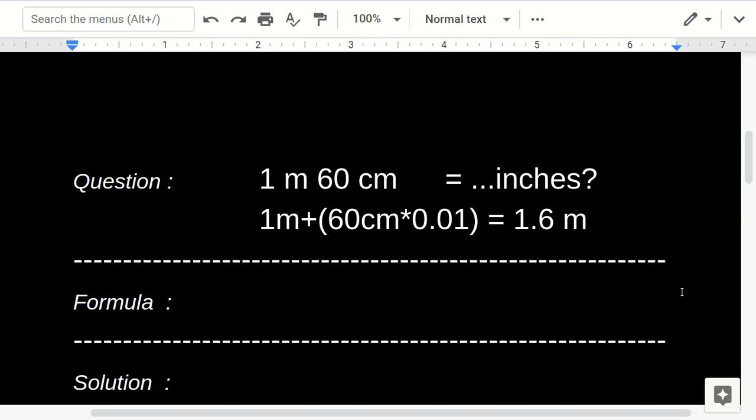Okay, now the formula for the conversion between meters and inches is: 1 meter equals 39.37 inches. That's the formula.